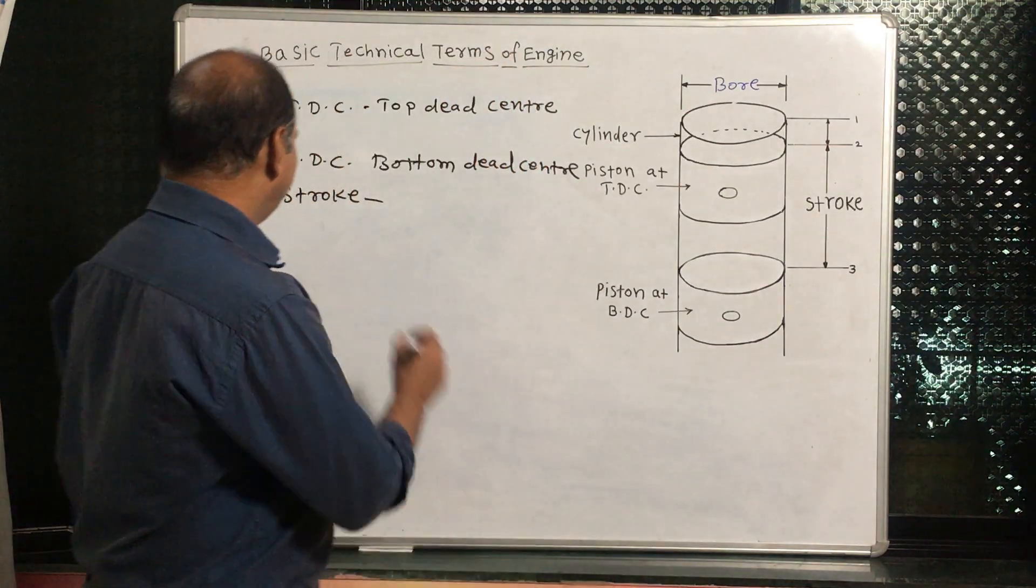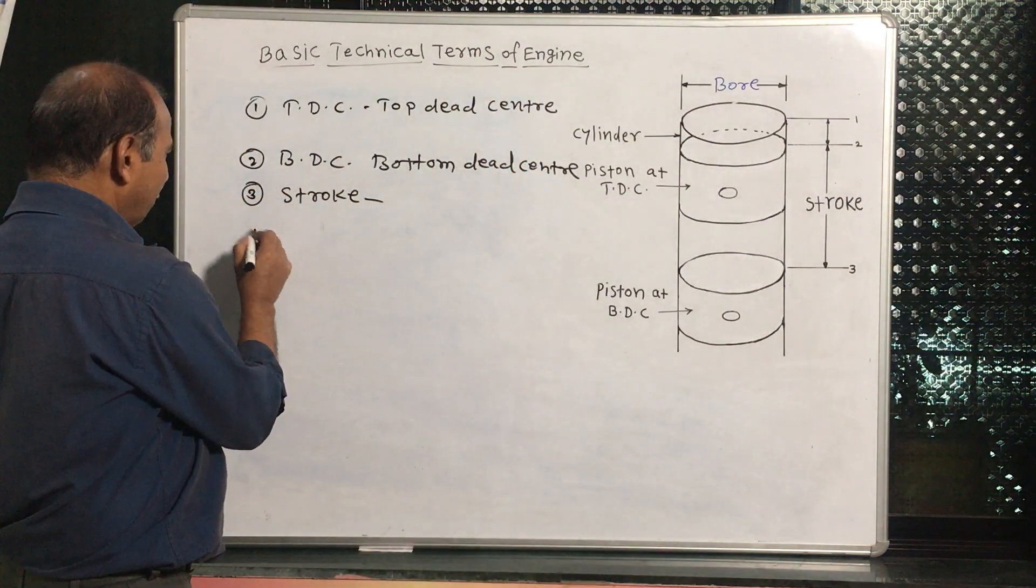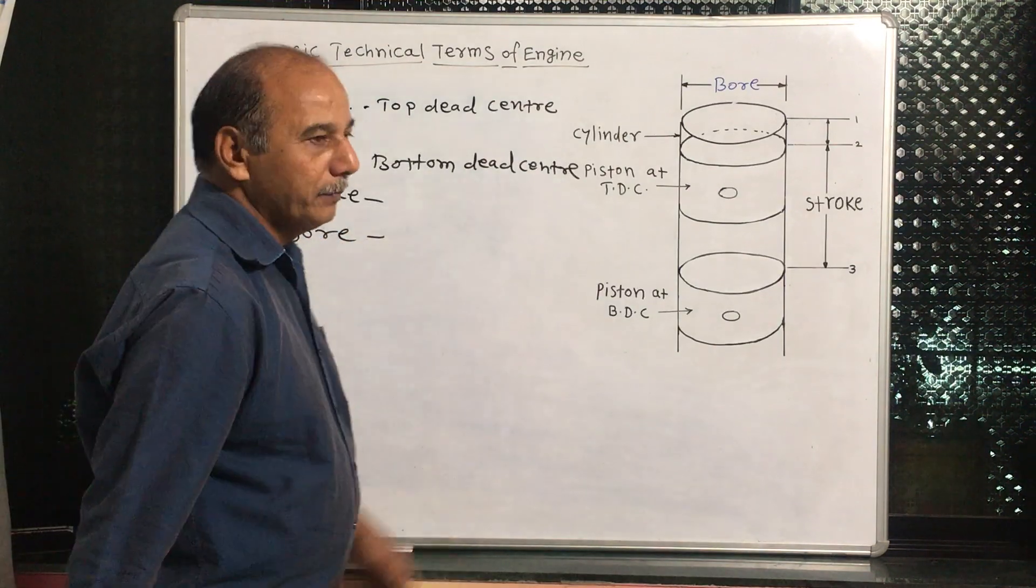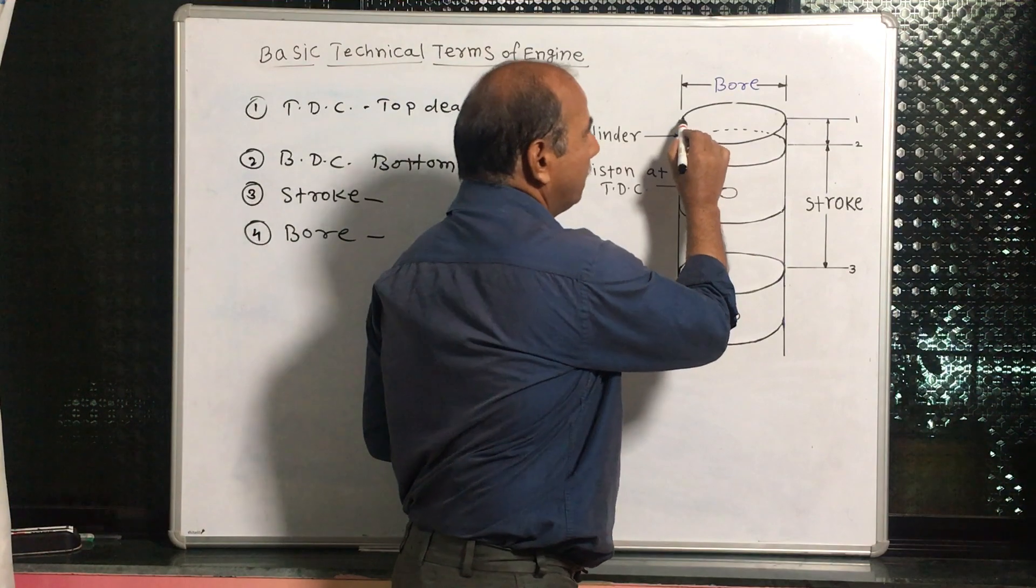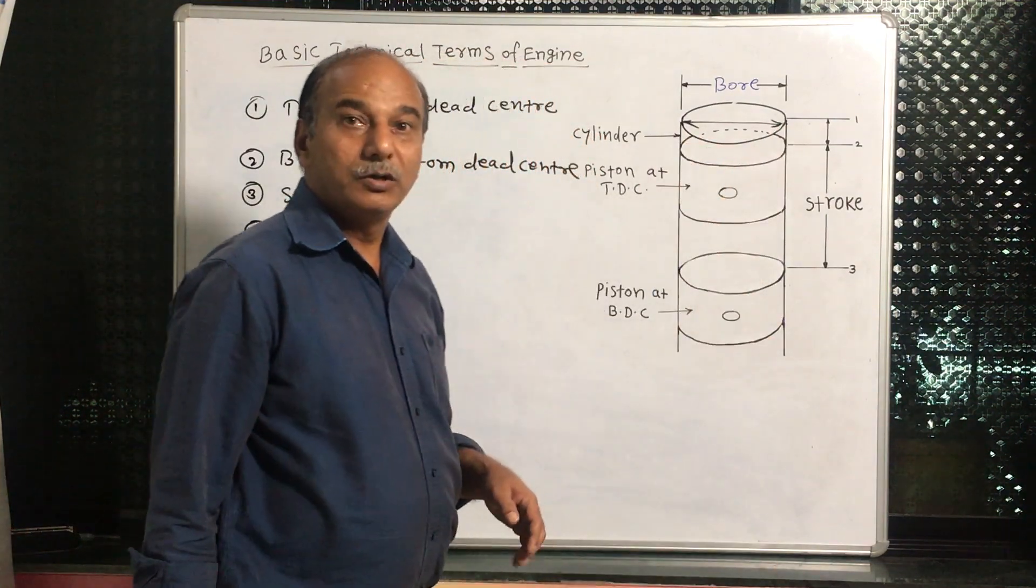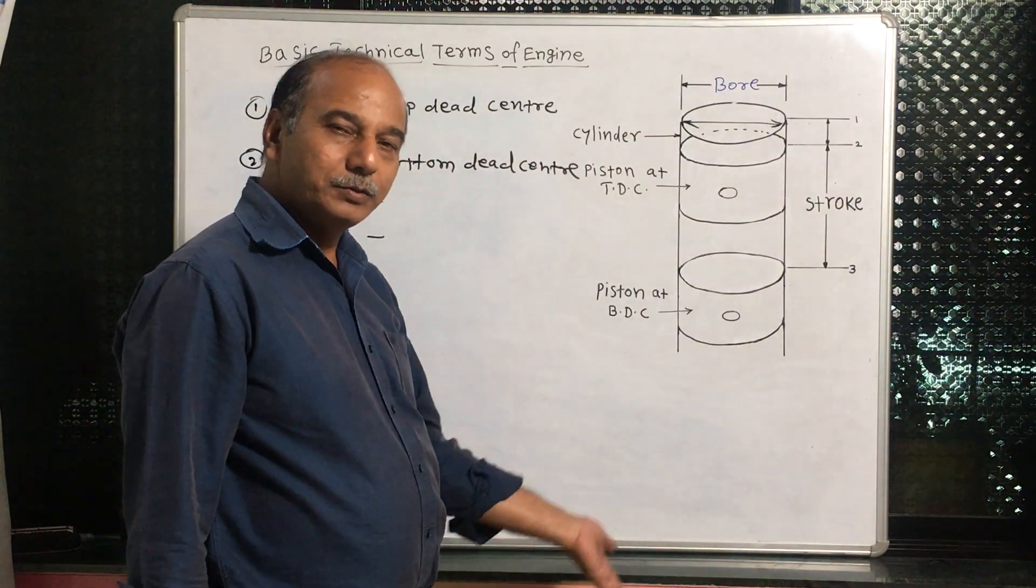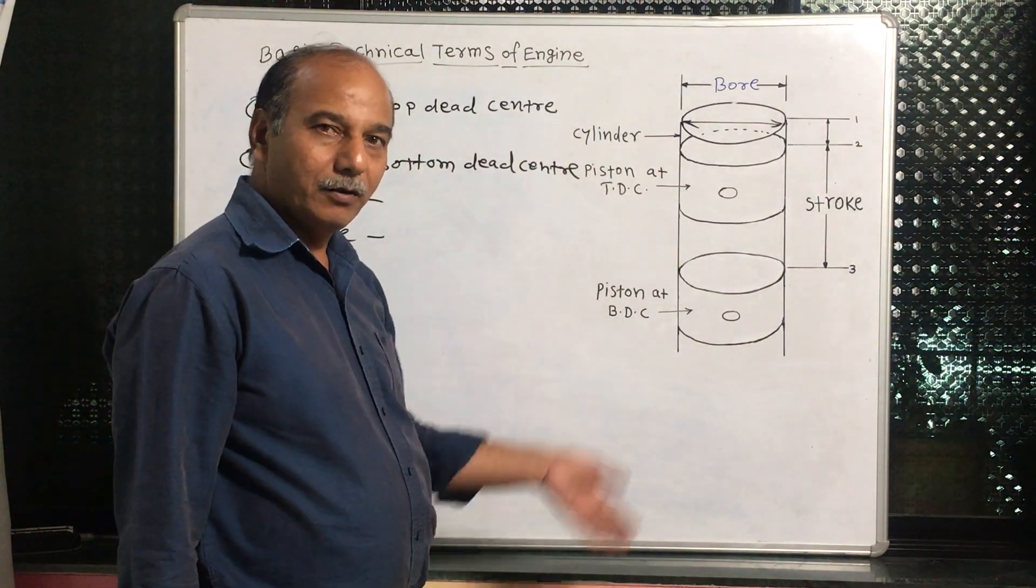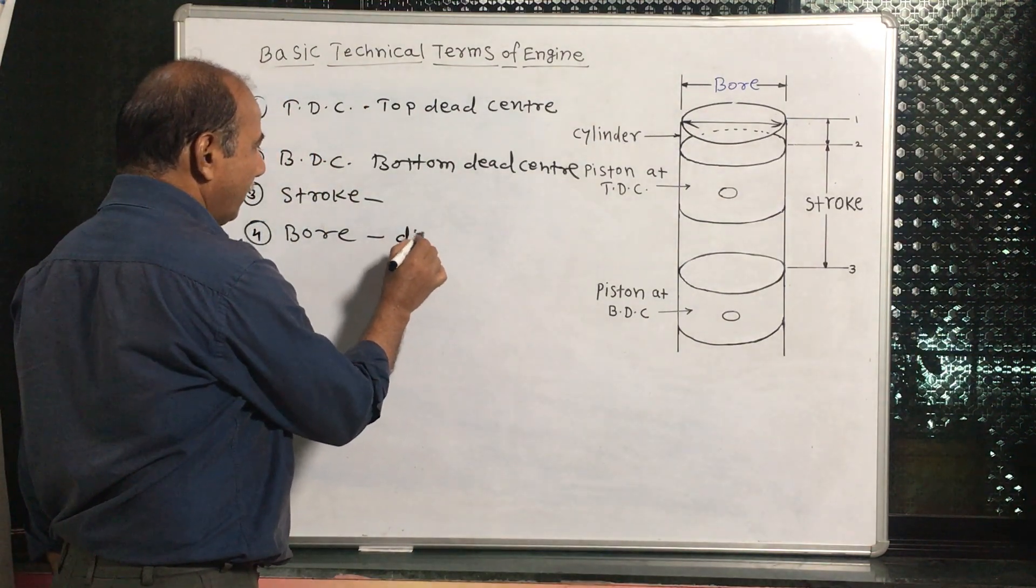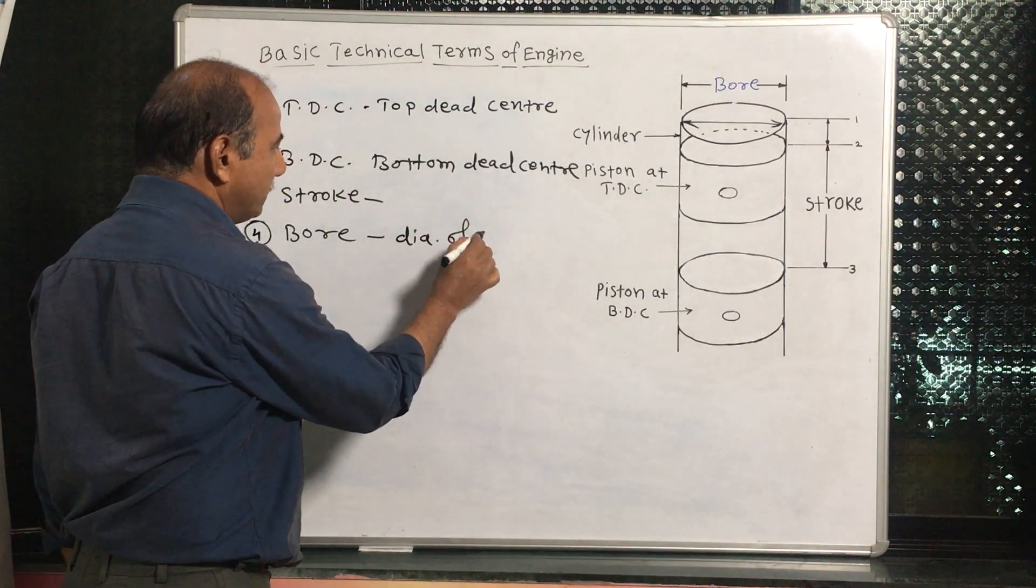Then what is the bore? Bore, number four. Bore means diameter of the cylinder. Diameter of the cylinder is called the bore. In this bore, piston moves up and down. That's why we can add here diameter of cylinder.